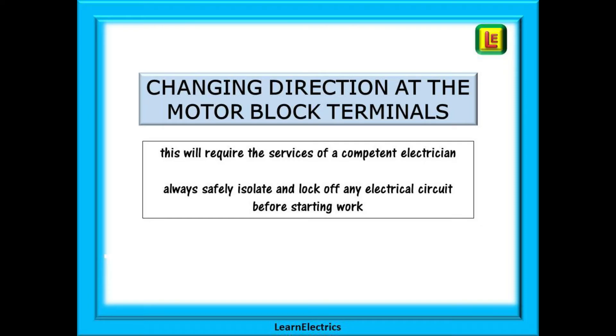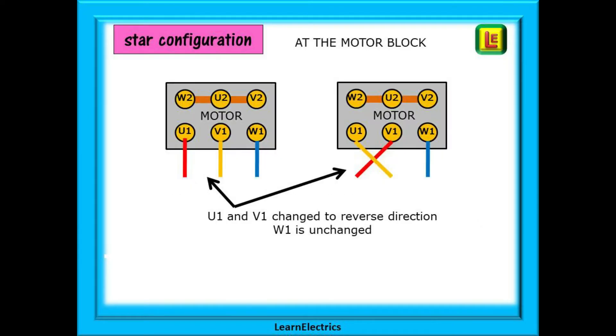So let's look at what is required. The links in the three-phase motor may be connected as a star configuration as is shown here. To change direction, leave the two links as they are and change any two of the incoming phase wires. Here we have decided to change the positions of the red and yellow wires.